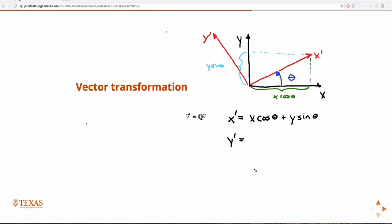So then y prime, what is y prime in terms of x and y? Remember, there's a negative x-axis over here. This is still x, just in the negative direction. So the projection would be this guy. That's minus x sine theta plus y cosine theta.